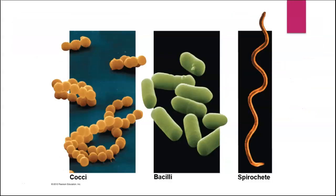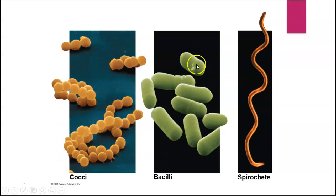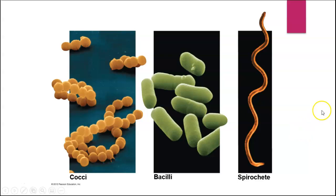Here we have some examples of cocci that are in chains, like streptococcus — if you've ever had strep throat, that's a type of streptococcus. Here are some rod-shaped bacilli, which probably looks something like E. coli. And here's a spirochete. Spirochetes and spirilla are less common than cocci and bacilli, but they're all around and responsible for some pretty serious diseases.